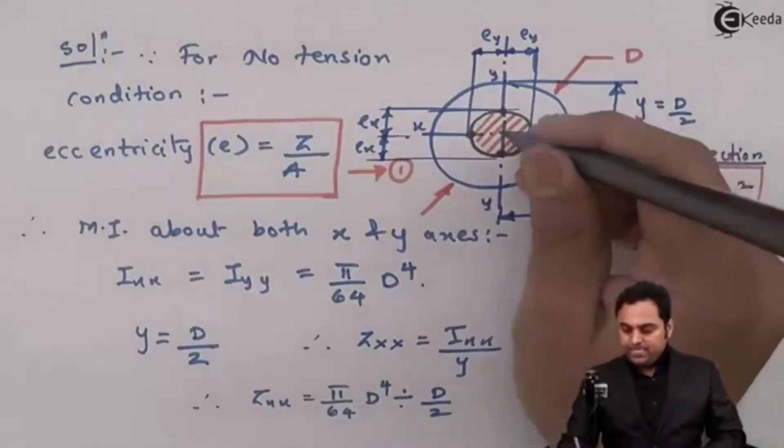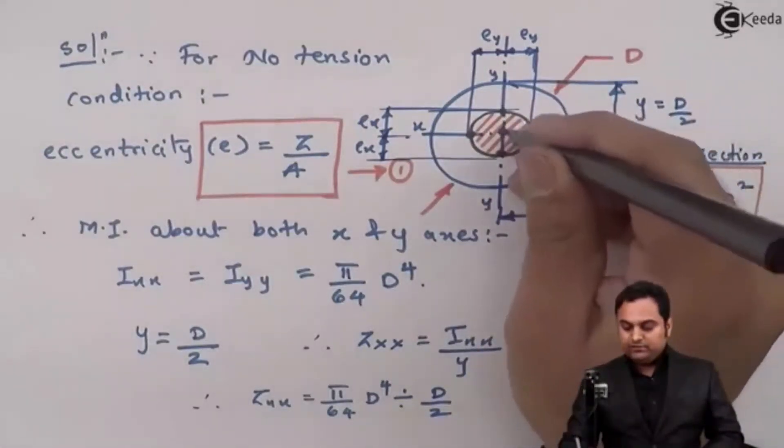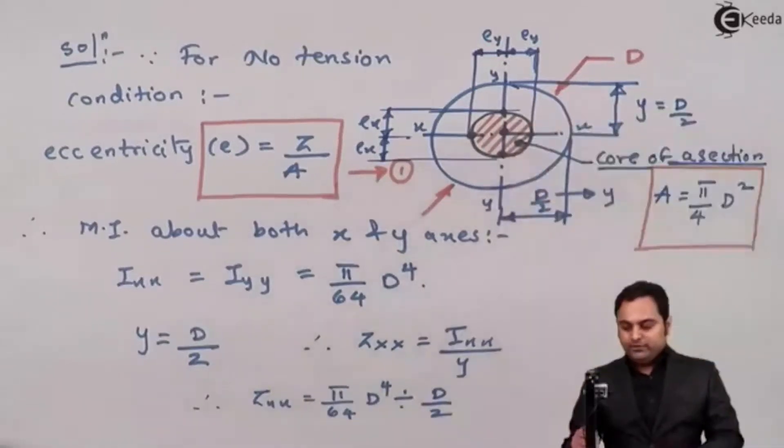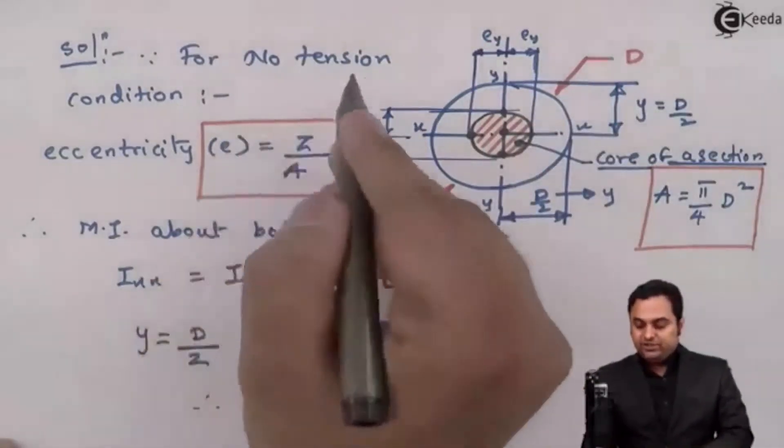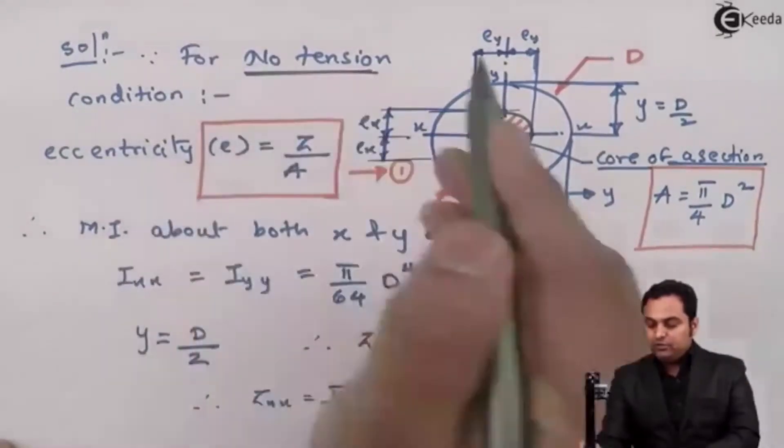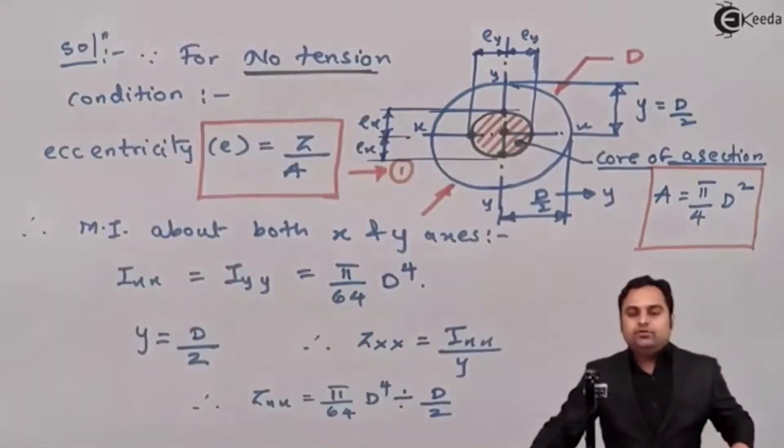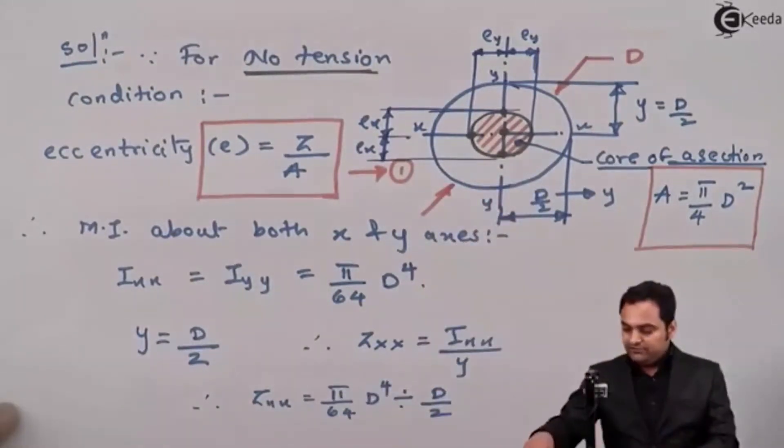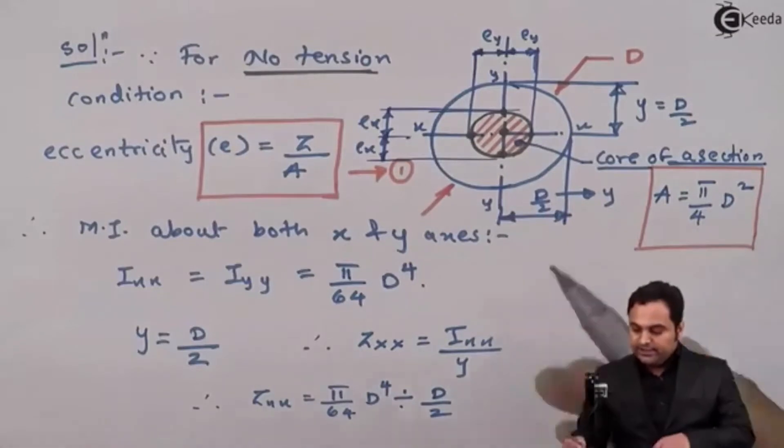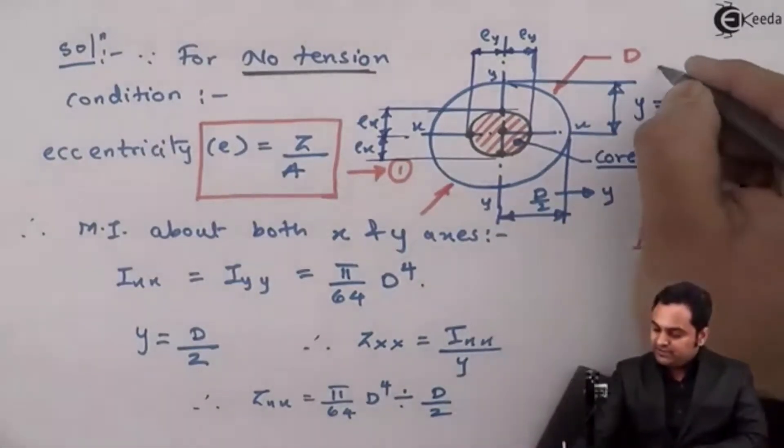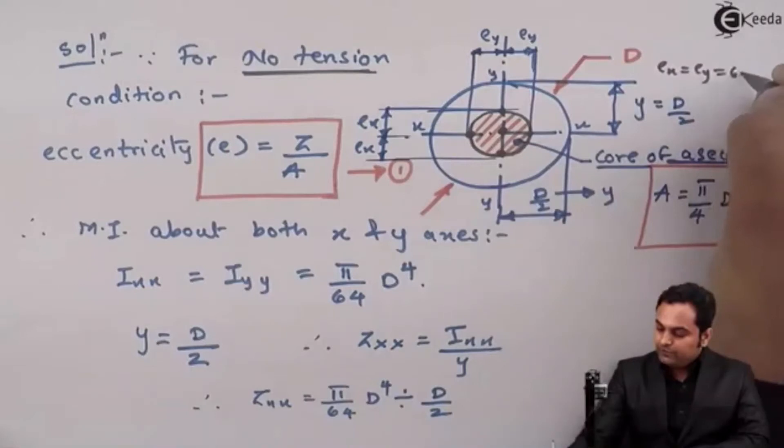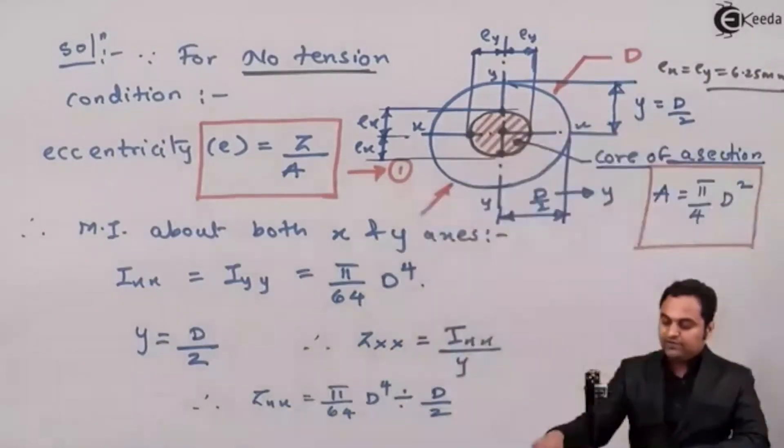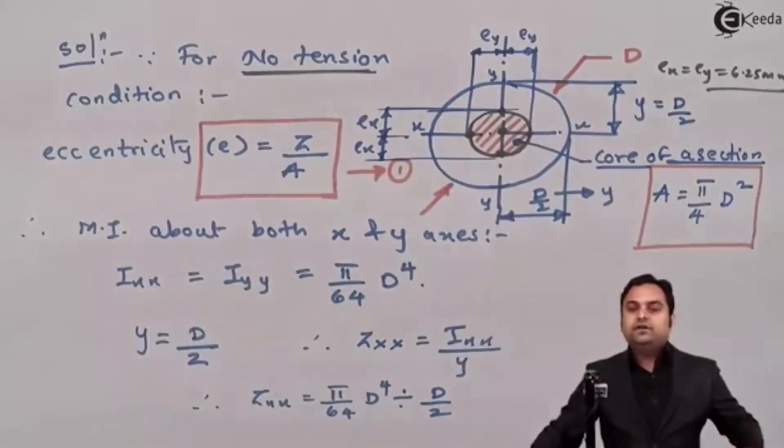And here this core of a section indicates the limit of eccentricity. Limit of eccentricity means the point or the distance from the center of a circle at which we can place the load so that there will be no tension in the condition and it will result in only compression. And because of that the section won't be removed from its foundation, it would be fixed. And EX and EY both the values are same as we have written, it is equal to 6.25 mm. So here this circle has a radius of 6.25 mm and with this we complete the question.